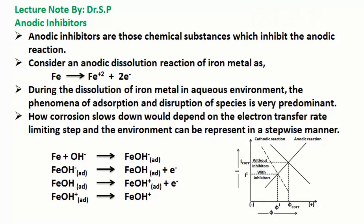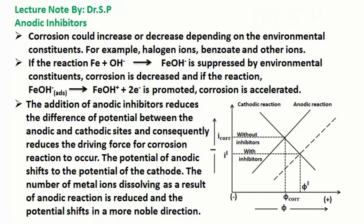During the dissolution of iron metal in an aqueous environment, the phenomena of adsorption and disruption of species is very predominant. How corrosion slows down depends on the electron transfer rate-limiting step. The environment can be represented in a stepwise manner, as shown in the equations — corrosion could increase or decrease depending on the environmental constituents.